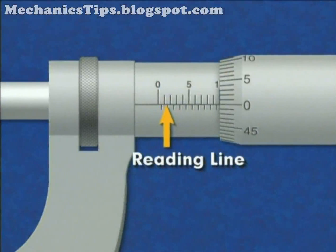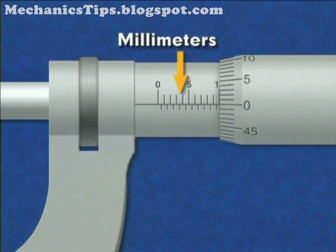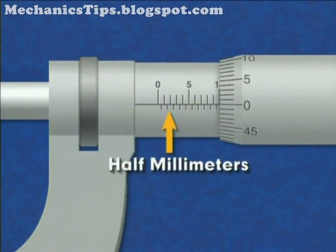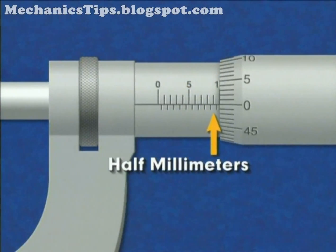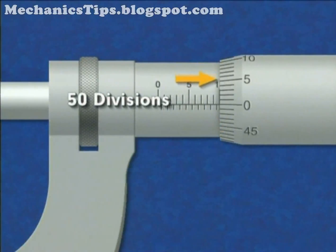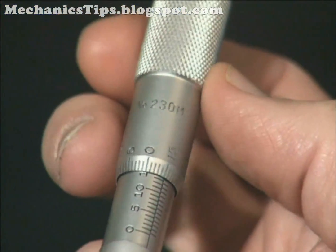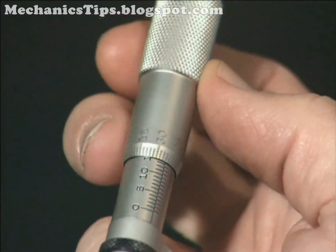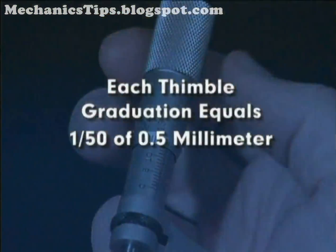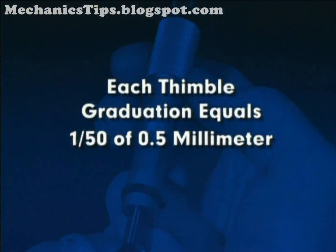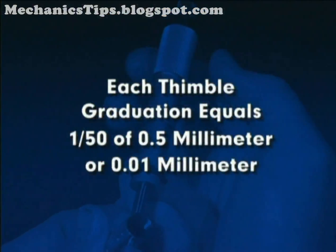The micrometer has a reading line on the sleeve. The vertical graduations on the top of the reading line each represent a single millimeter. The vertical graduations below the reading line indicate half millimeters. The beveled edge of the thimble is graduated into fifty divisions. Since a single revolution of the thimble moves the spindle one-half millimeter, each thimble graduation equals one-fiftieth of one-half millimeter, or one one-hundredth of a millimeter.